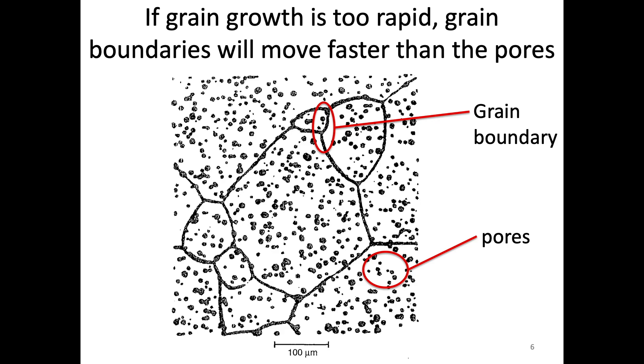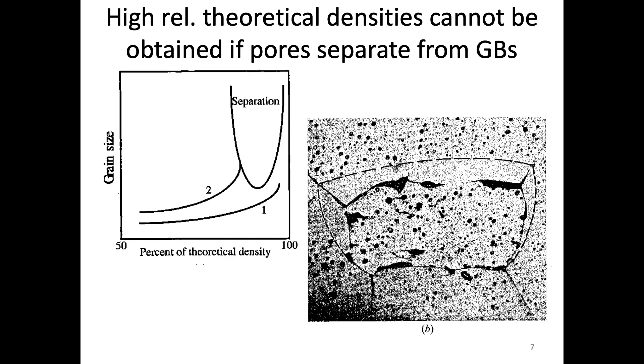So once we've reached the point where grain boundaries have detached from pores, or the other way around, then we're not able to remove this porosity. And so our density is too low because we aren't able to fully do that. And again, this is a consequence of too rapid grain growth. So this is why a big push is to try to limit grain growth when we sinter. And so basically that's what's happening in this example.